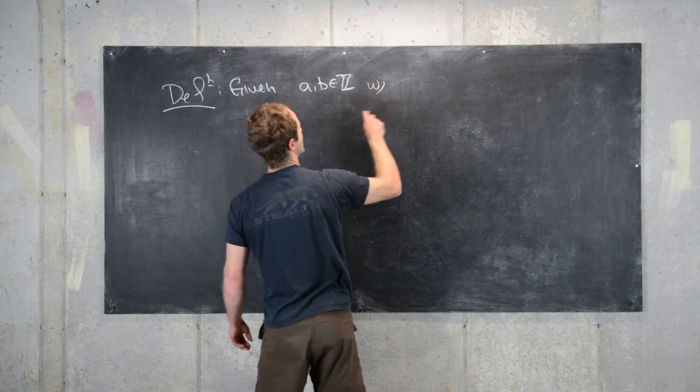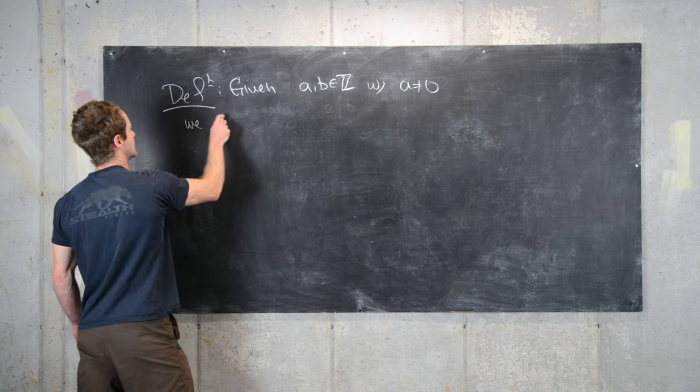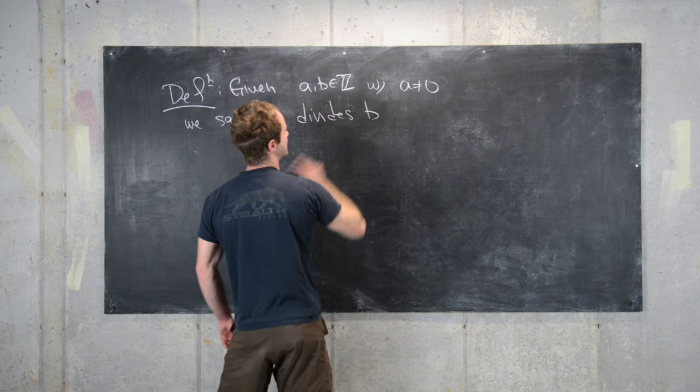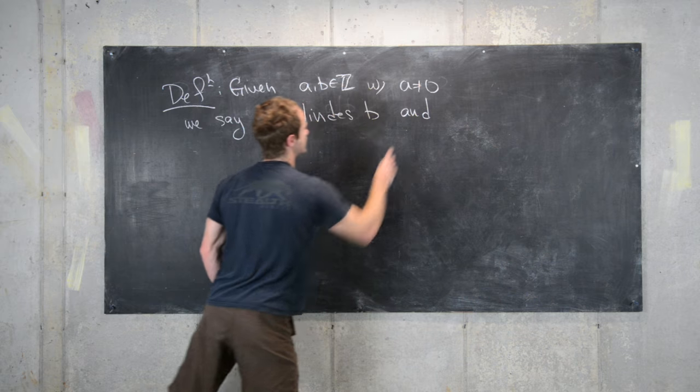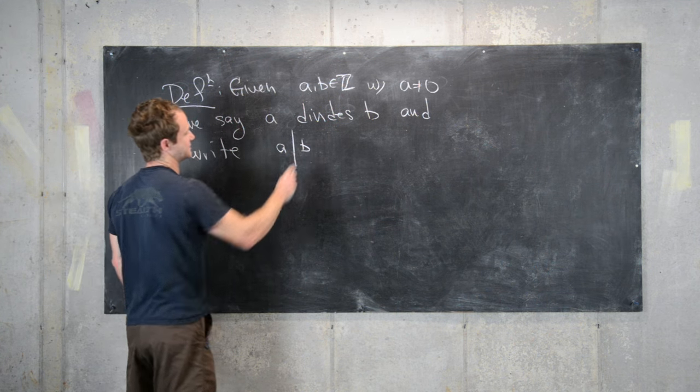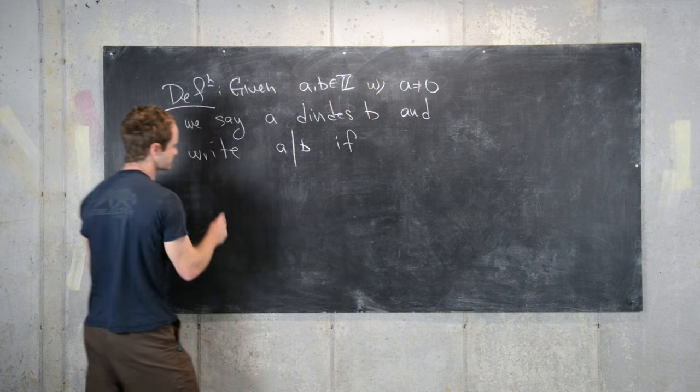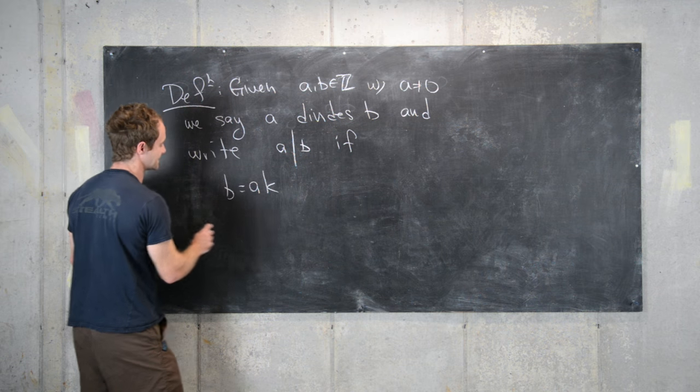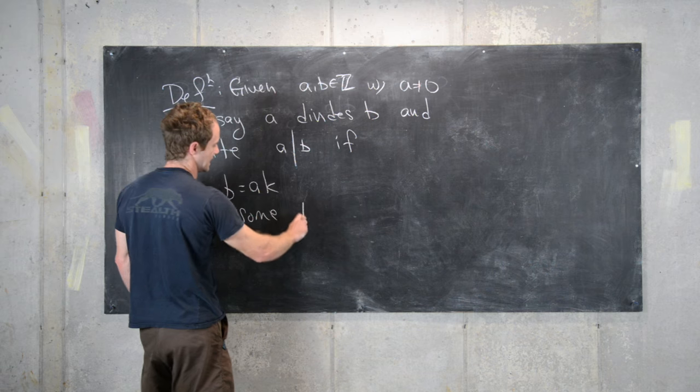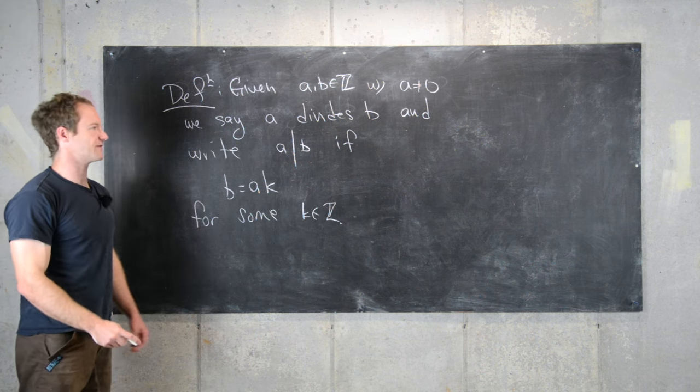with a not equal to 0, we say a divides B, and the notation is we write a divides B with a vertical line if B equals a times k for some integer k. So this is our definition.